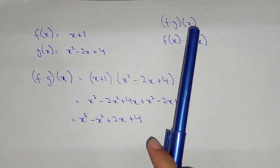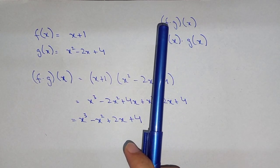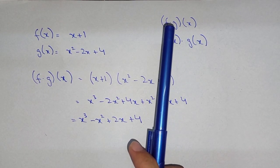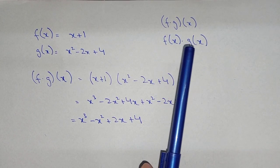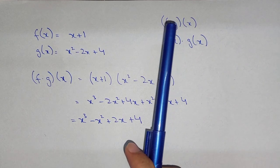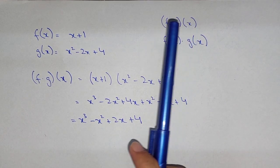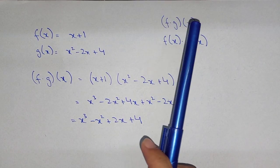So the notation for multiplying the function is f times g of x. So it means that f of x multiply the g of x. But this is the standard form of notation. One should write this one while solving the problems.